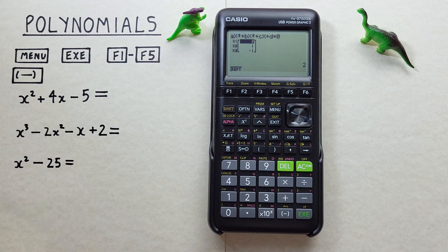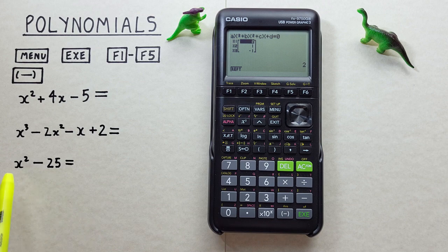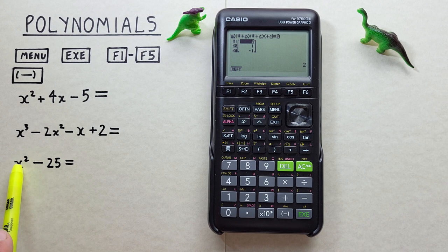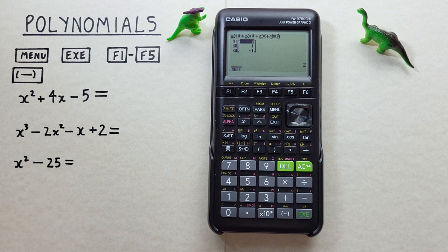Let's look at one more example. X squared minus 25. You'll see in this example we don't have a value of X, only X squared and the 25. So how do we do that?